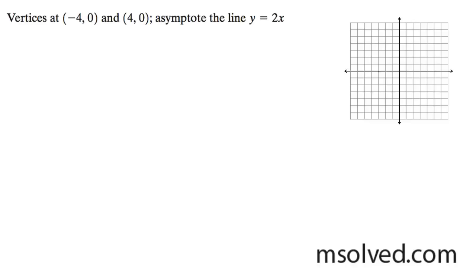We can go ahead and start putting the components down, so negative 4, 0, and 4, 0 for the vertices.